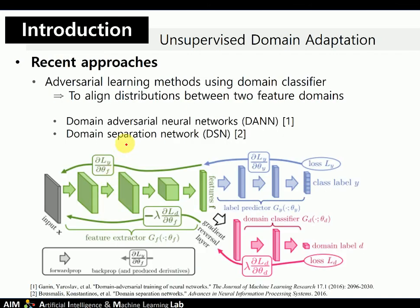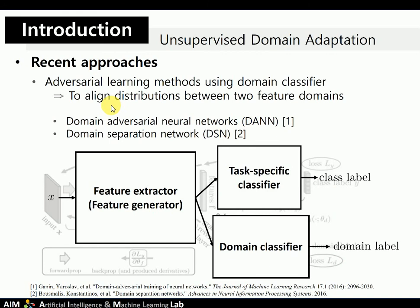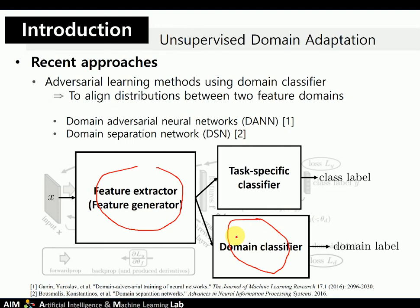To solve this problem, some papers proposed domain classifier-based adaptation algorithms. Domain adversarial neural networks and domain separation networks used domain classifiers with adversarial learning. These methods utilize two players — a feature generator and a domain classifier — to align distributions in an adversarial manner. The domain classifier is trained to discriminate domain labels of features generated by the generator, whereas the feature generator is trained to fool the domain classifier, similar to generative adversarial networks.